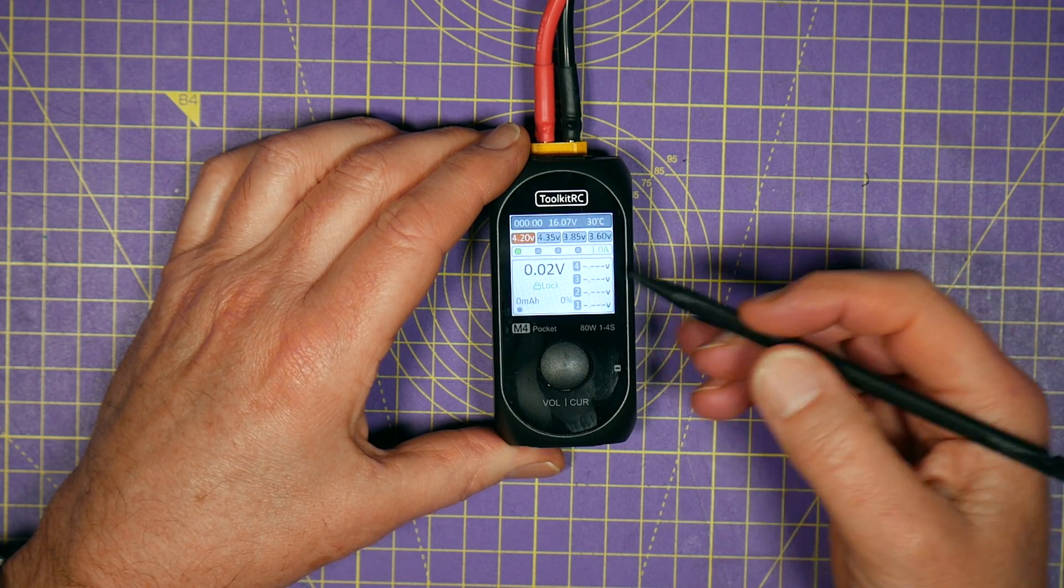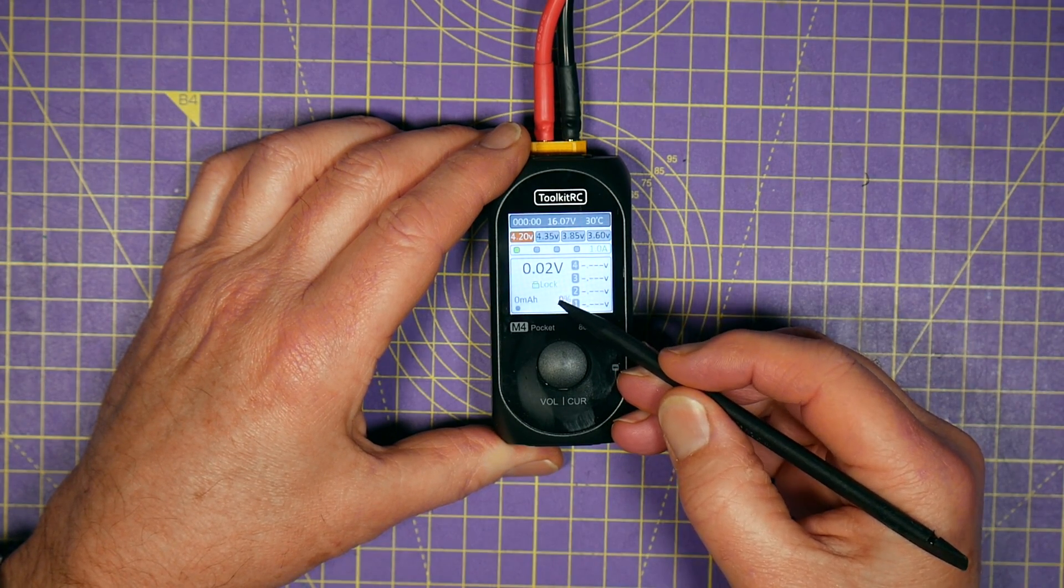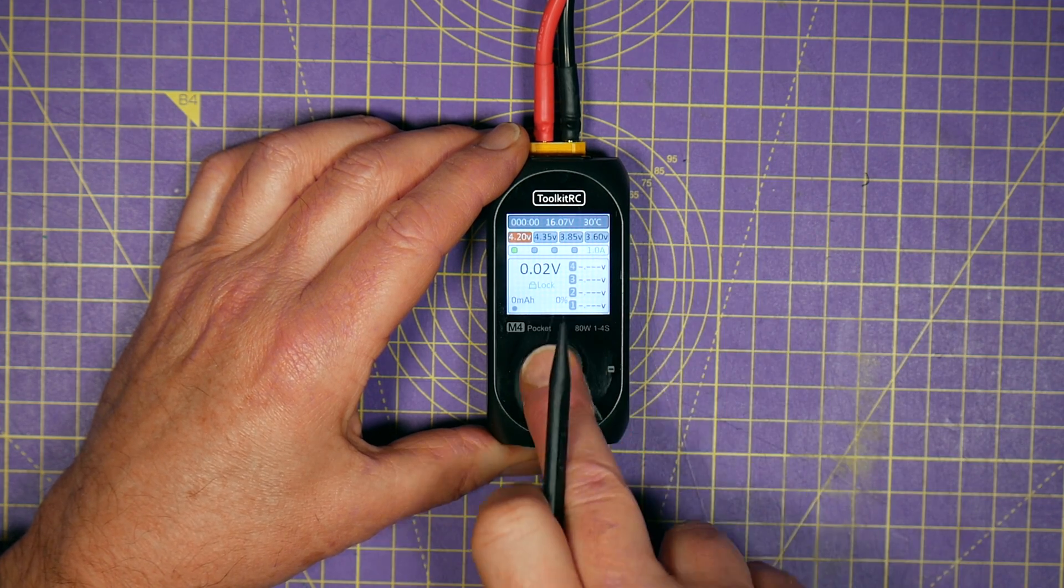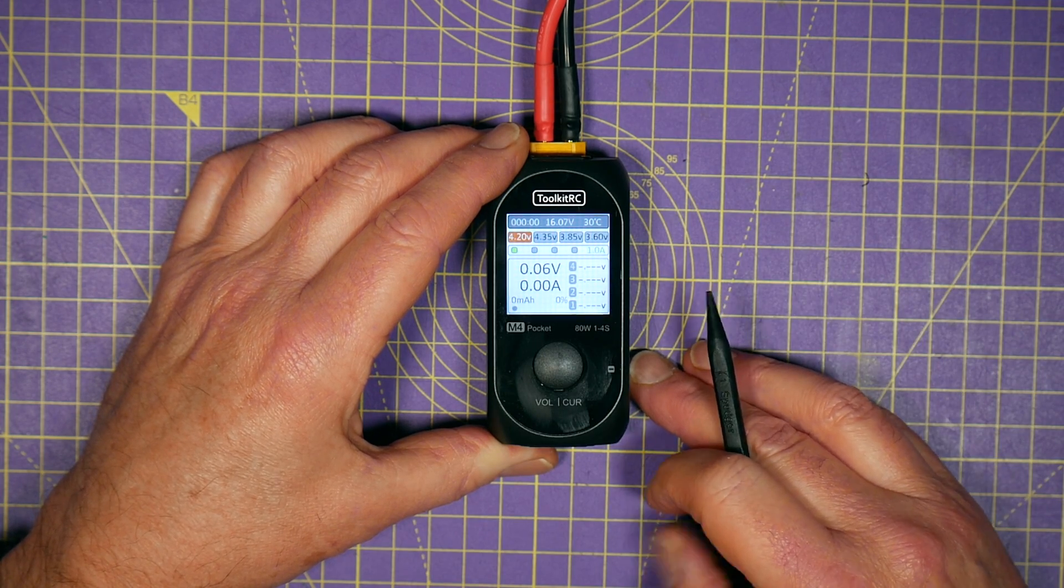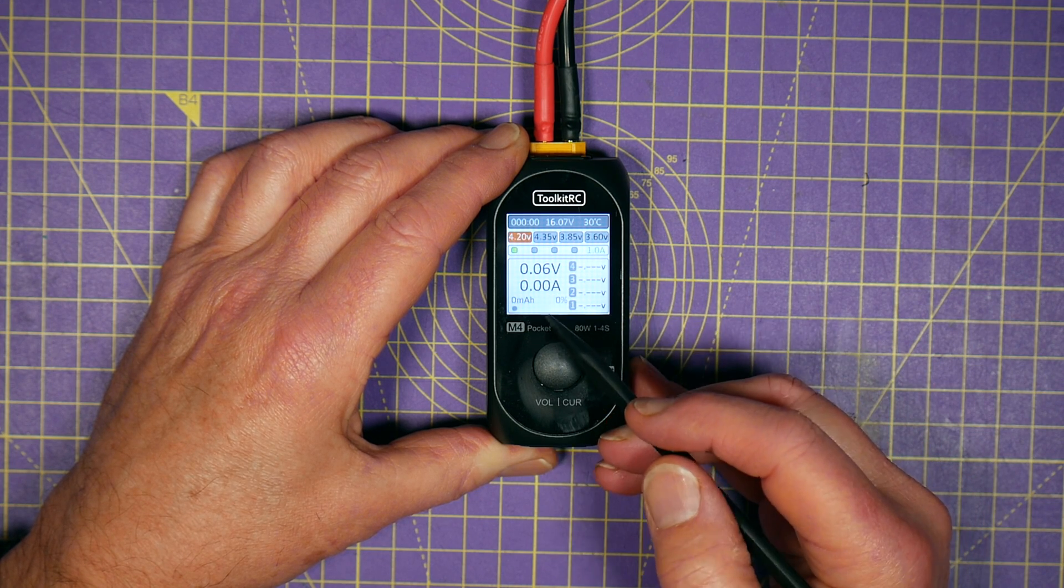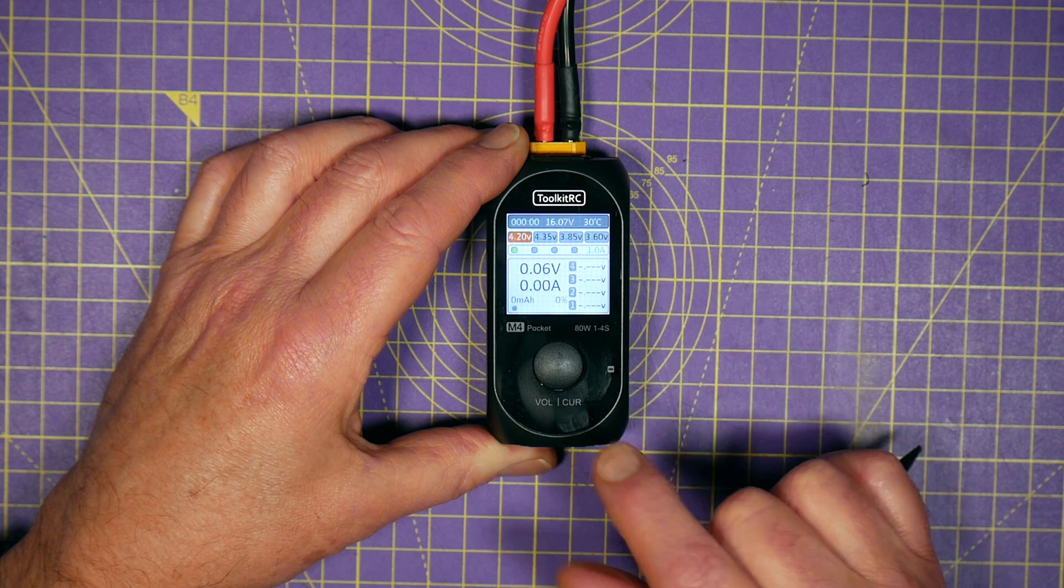So once it's powered up there's a small lock symbol on the display here and that's just a safety feature so you can't do anything inadvertently. So you have to press the button to wake it up. And there's four presets for battery current and you select that with a single button press.